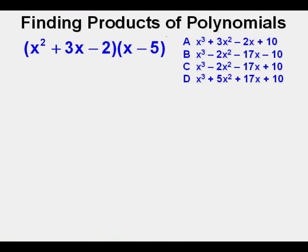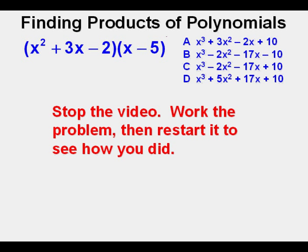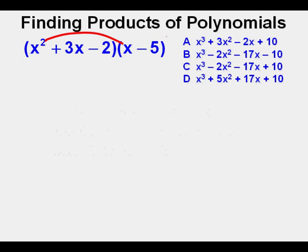And now we'll look at our final problem quantity x squared plus 3x minus 2 times quantity x minus 5. And for this one I'll give you multiple choice options. I invite you to stop the video and try to solve this problem then restart to see how you did. And for this one we have as our first term of our answer x cubed since x squared times x is x cubed.